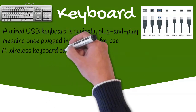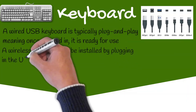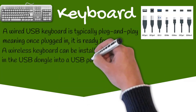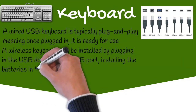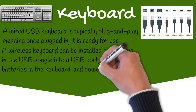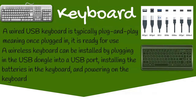A wireless keyboard can be installed simply by plugging in the USB dongle into a working USB port on the computer. You will then install the batteries on the keyboard, and once the batteries are installed and the dongle is plugged in, you simply turn on the keyboard, at which point the keyboard should be recognized.